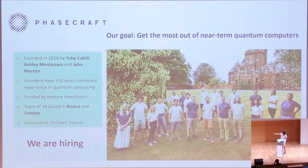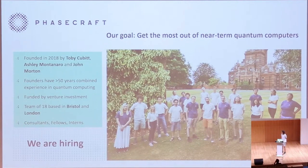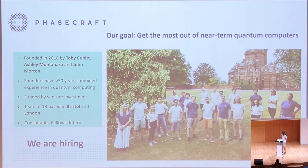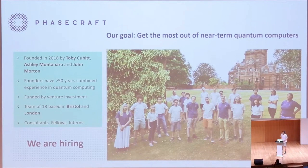We were founded in 2018 by Toby Cubitt, Ashley Montanaro, and John Morton. We're based out of London and Bristol. We're a small team, approximately 18 people now. Our general aim is to try and bring down the algorithmic overheads in useful applications with the hope that we might be able to reach near-term quantum hardware where it's going to be in the next few years. And we're hiring if you're interested in working on this kind of really daunting and ambitious problem.